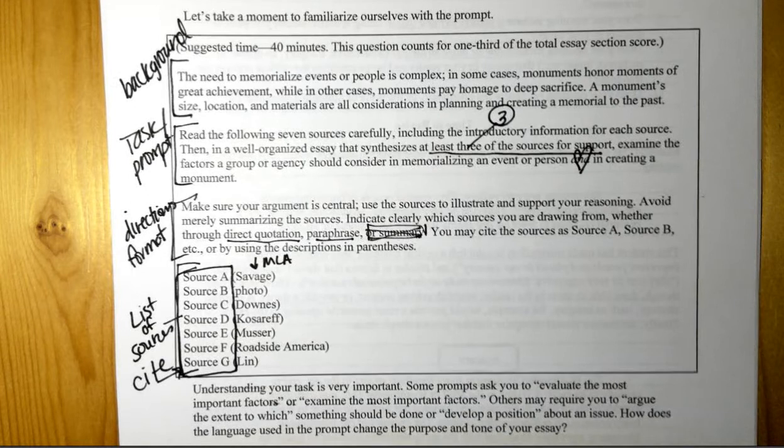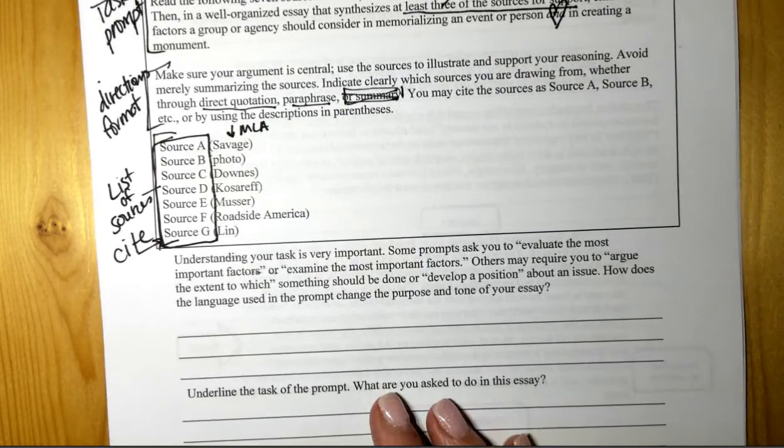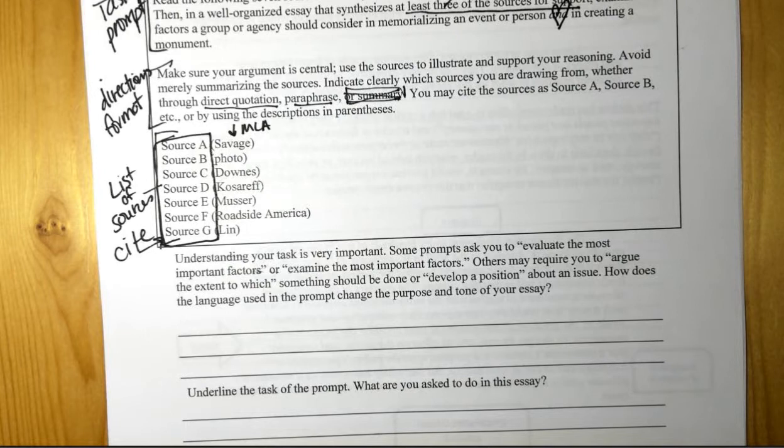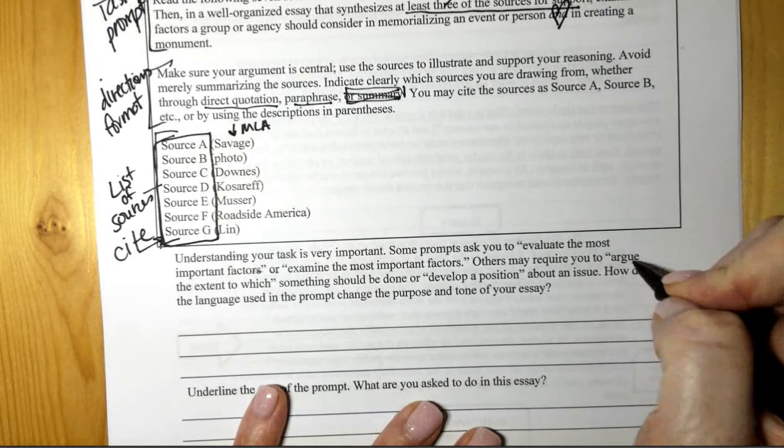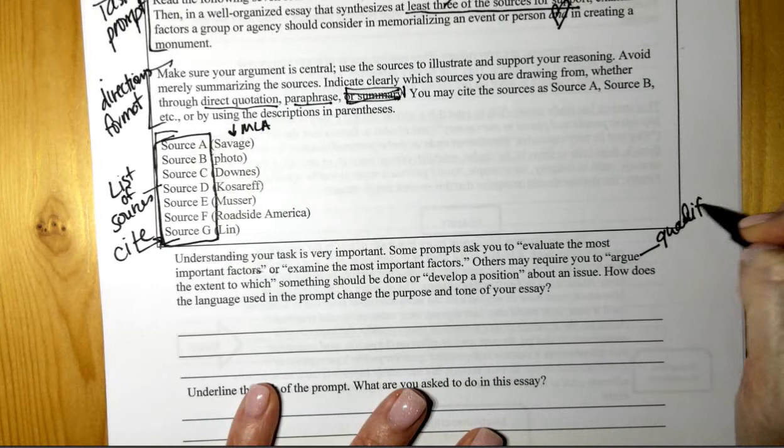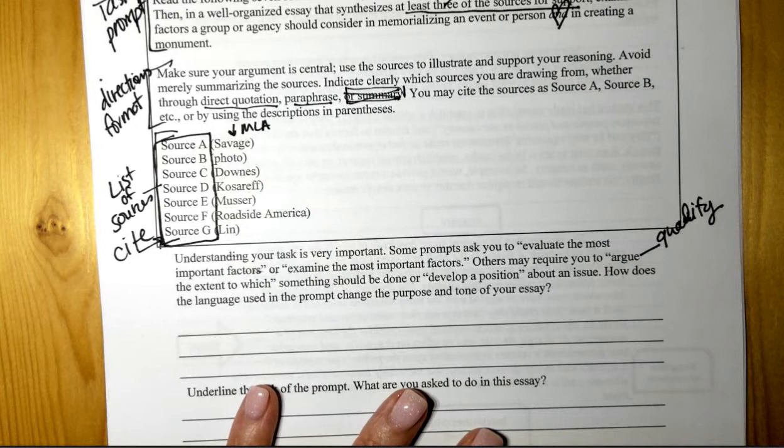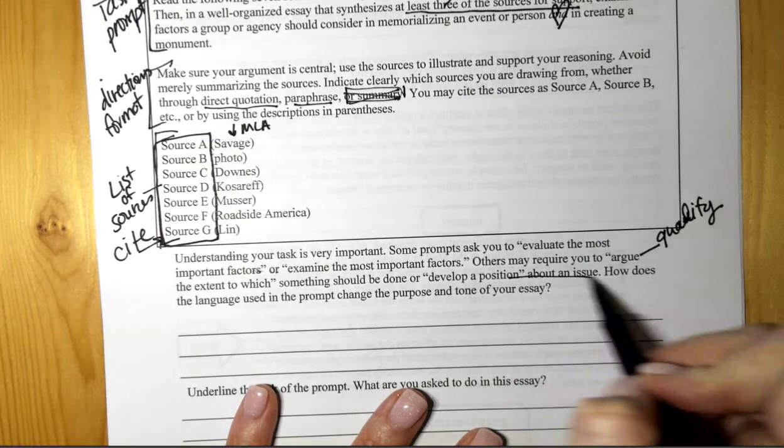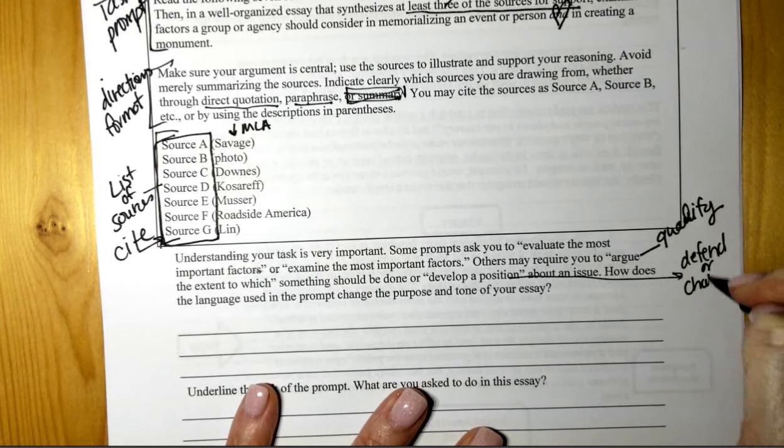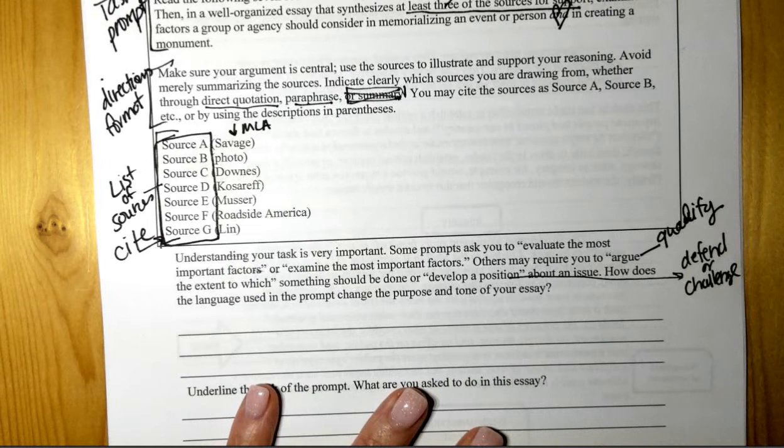All right, so let's look at the task. Understanding your task is very important. Some prompts ask you to evaluate the most important factors or examine the most important factors. Others may ask you to argue the extent to which something should be done or develop a position about an issue. So let's look at this. If you argue the extent to which that is qualifying, right? So this is an argument. So synthesis is an argument. Argue the extent to which means you're going to argue, develop a position means you have to defend or challenge.